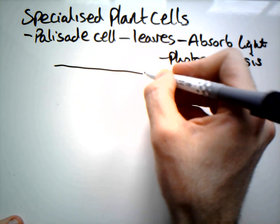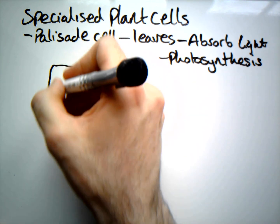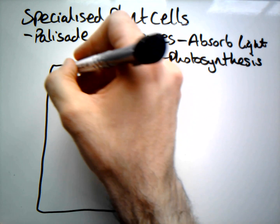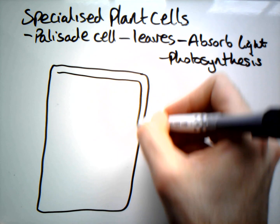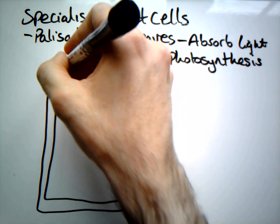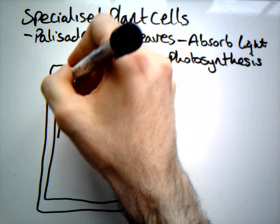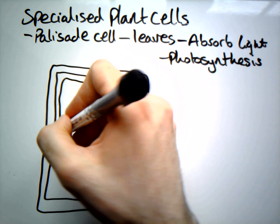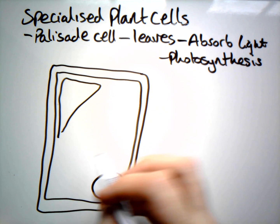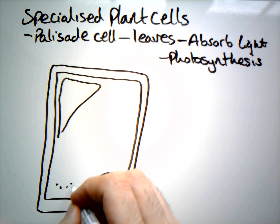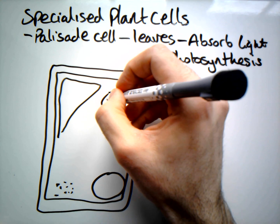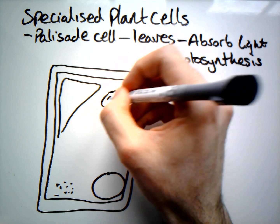Our palisade cell, if we draw one, is going to look very much like our generic plant cell. It's going to have all the same key features — all those seven components — including a number of mitochondria.